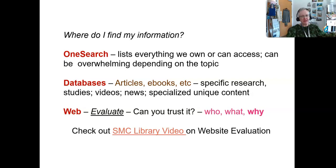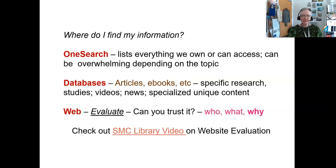The second place you go looking is specific databases. Databases can be general, covering a little bit of everything, or format-specific — only newspapers or only journal articles. Or they might be topic-specific, covering only business, art, or a specific science. The databases take a little bit longer to search and assume you know more about your topic.